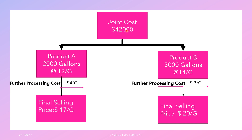The joint cost is $42,000 and the two products produced are product A — 2,000 gallons — and product B — 3,000 gallons. I'm giving you a scenario that I'll use to explain all the methods of joint cost allocation. This scenario also shows a further processing cost of $4 per gallon for product A and $3 per gallon for product B, with final selling prices of $17 and $20 respectively.